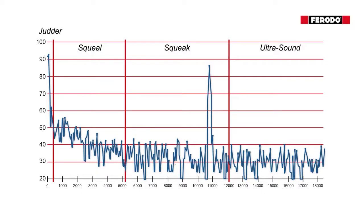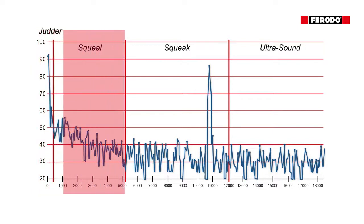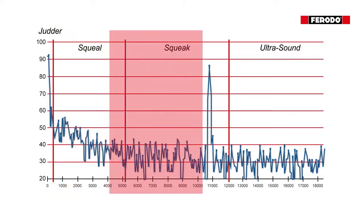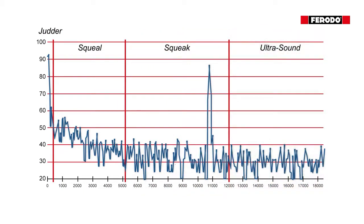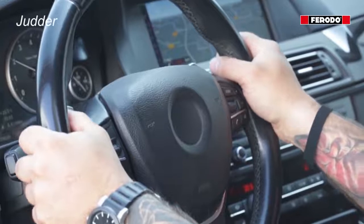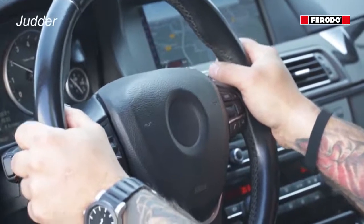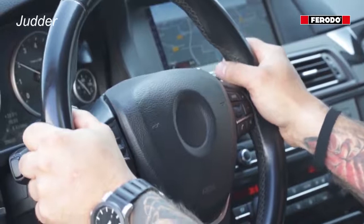Brake vibrations can occur at different frequencies, and for different frequencies we have different names. Below 300 Hertz it is called judder; with higher frequencies we call it squeal, squeak, or ultrasound, which cannot be heard. All vibrations are resonances at the natural frequency of the brake system. Most people are aware that brake squeal or squeak is caused by vibration.